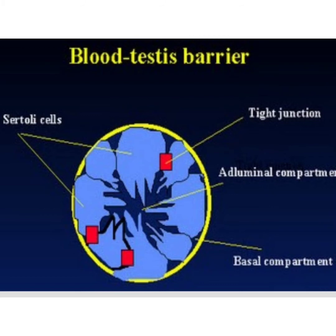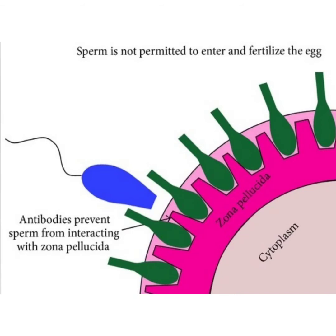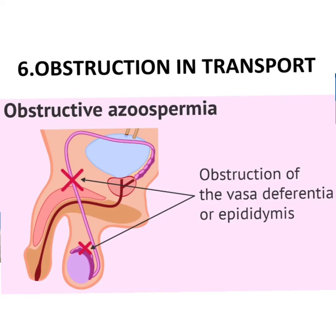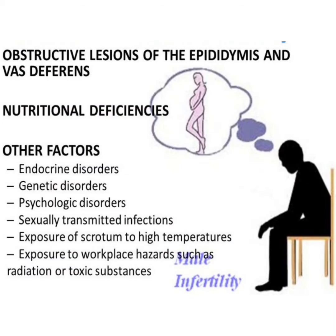When sperms enter the circulation, this triggers an antibody response. The antibody formed will not permit the sperm to fertilize the egg — specifically, antibodies prevent the sperm from interacting with the zona pellucida. Obstruction in sperm transport, called obstructive azoospermia, may occur in the epididymis or vas deferens. Other factors causing male infertility include nutritional deficiencies, endocrine disorders, genetic disorders, and psychological disorders.